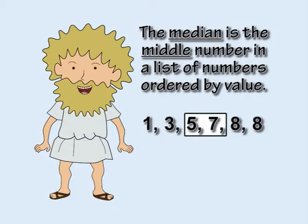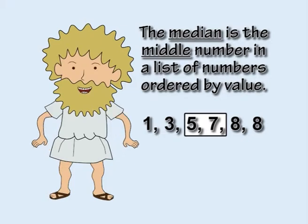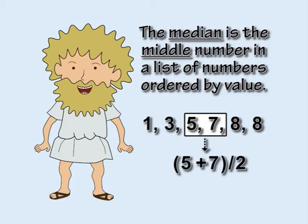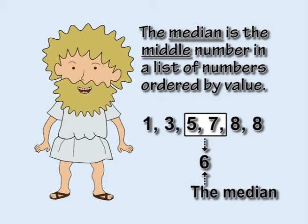If you have an even amount of numbers, there will be a pair of numbers in the middle. In this case, you calculate the median by adding the pair together and dividing by two, which results in a middle number that is halfway between them.